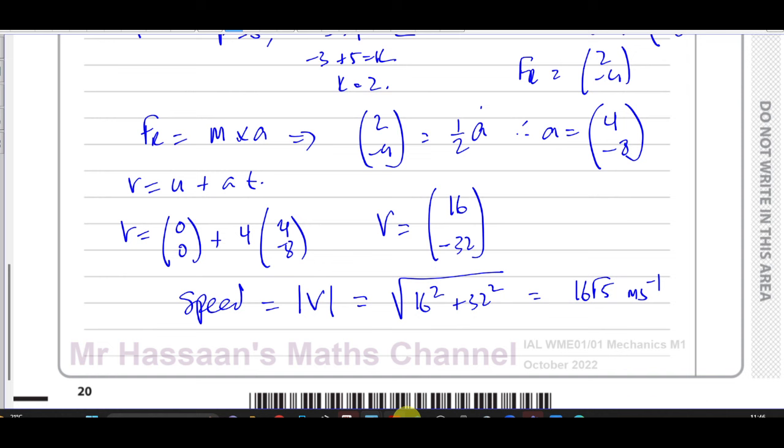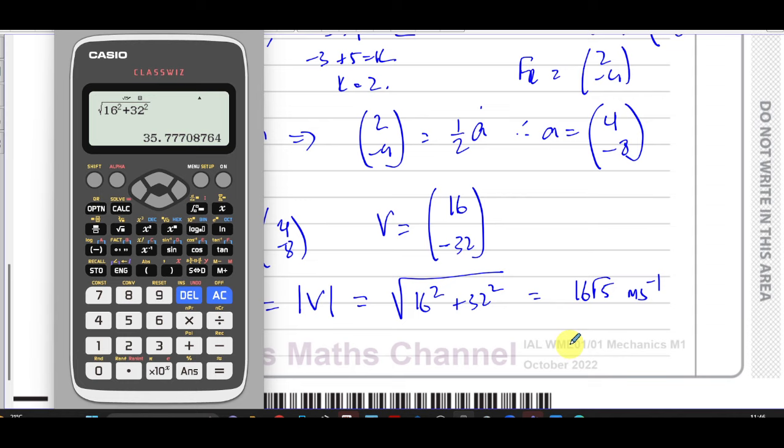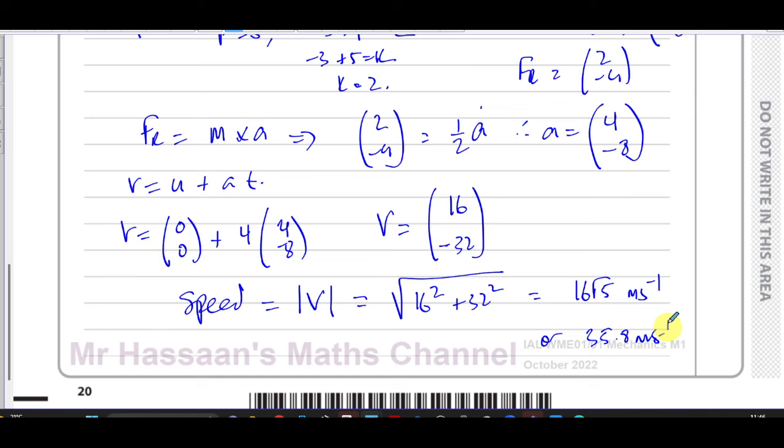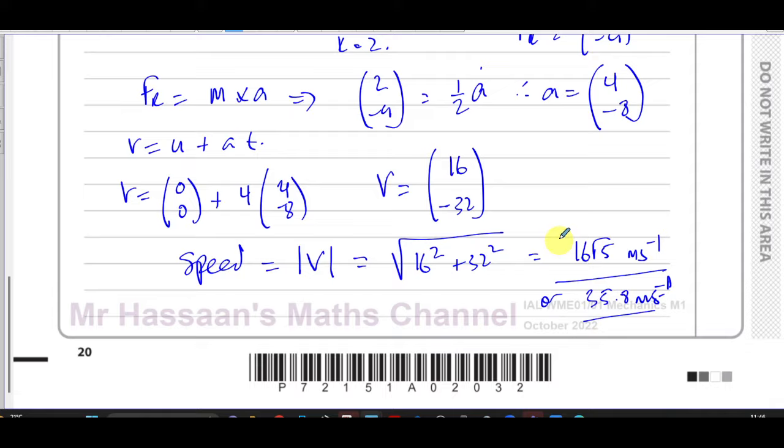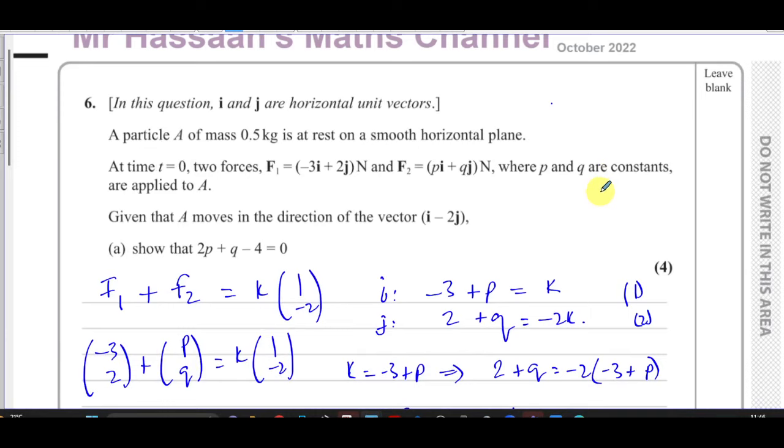16 times root 5 meters per second. If you want to write it in 3 significant figures, 35.8 meters per second. Both of those should be acceptable as our answers. Either you can write it in exact form or 3SF. It doesn't state. So there's the answer to this question, question number 6.